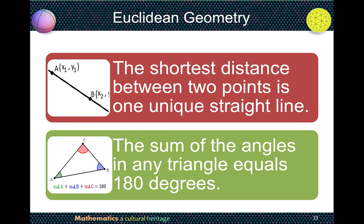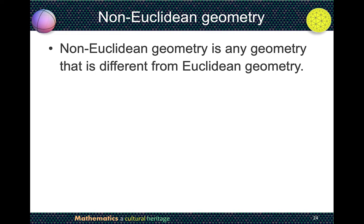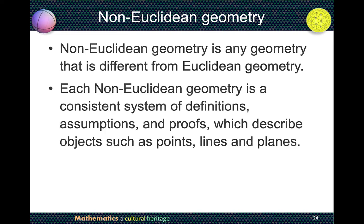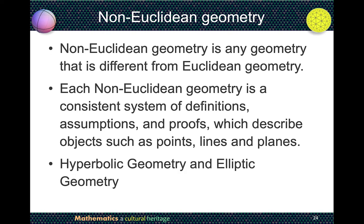So what exactly is non-Euclidean geometry? We have to start with Euclidean geometry, developed at the time of Euclid around 300 BCE. What we learn today in mathematics textbooks is mostly Euclidean geometry. Basic propositions include: the shortest distance between two points is one unique straight line, and the angle sum of triangles is 180 degrees. Non-Euclidean geometry is any geometry different from Euclidean geometry — each a consistent system of definitions, assumptions, and proofs describing points, lines, and planes. For example, hyperbolic geometry and elliptic geometry are non-Euclidean geometries.